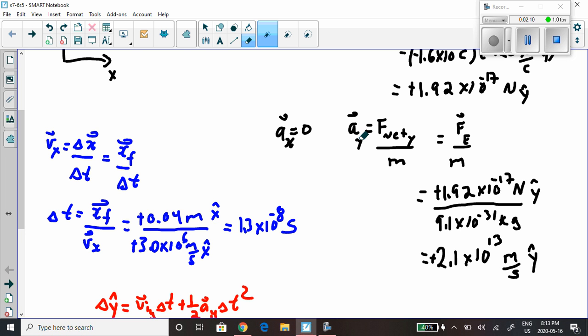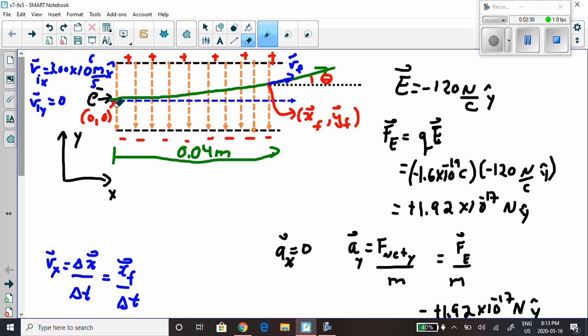Now that we know the acceleration here, it's like knowing g of negative 9.8 meters per second squared when we were doing a projectile motion question, except our acceleration isn't g, it's this. But it's a projectile motion question. So if they've given us the velocity in the x direction and they've given us how long the distance is from one end of the plate to the other, look from one end of the plate to the other it's 0.04 meters.